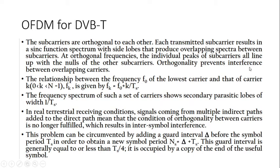Orthogonality prevents interference, and the relationship between the frequency of the lowest carrier and carrier K is given by a specific relation. The frequency spectrum of such a set of carriers shows secondary lobes of width 1/TS, where TS is the symbol time period. In real conditions, signals coming from indirect paths add to the direct path and may break orthogonality, causing inter-symbol interference. Therefore, a small guard interval of TS/4 is added, giving a new symbol period of delta plus TS.